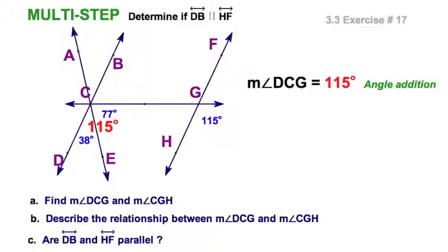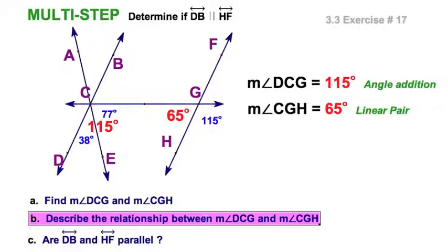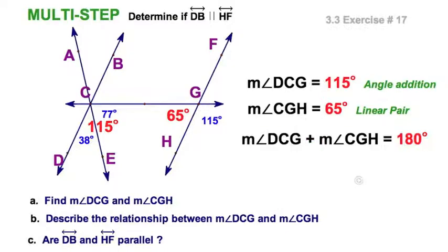And CGH, well, that would be over here. These two angles are a linear pair and therefore supplementary. Now, describe the relationship between these measures. Well, if you take the measures, those two measures, of course, add to 180 degrees.